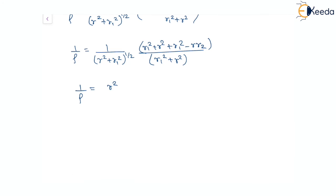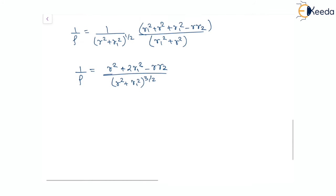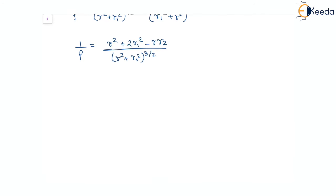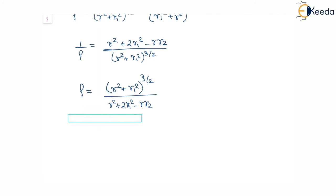Simplifying the numerator gives r² + 2r₁² - r·r₂, and the denominator is (r² + r₁²)^(3/2). Taking the reciprocal, the radius of curvature is: ρ = (r² + r₁²)^(3/2) / (r² + 2r₁² - r·r₂). This is the expression for the radius of curvature for a polar curve. Thank you.